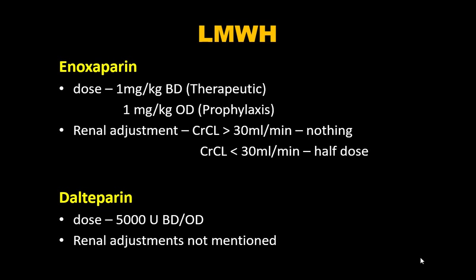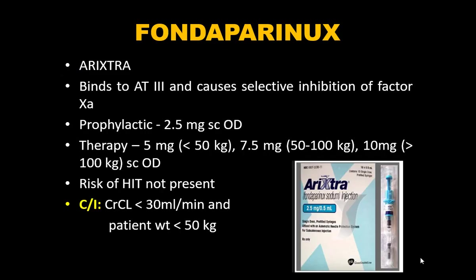For deltaparin in renal impairment, it is the preferred LMWH and the dose does not need to be changed. A common error is arbitrarily reducing the dose to 2500 IU — the correct dose is 5000 IU.